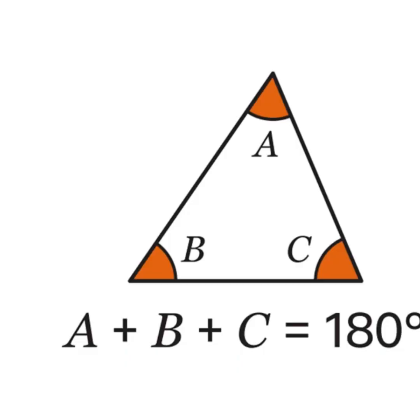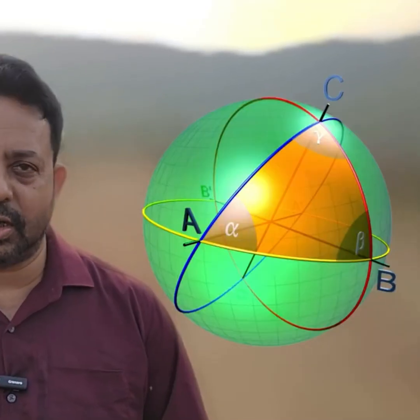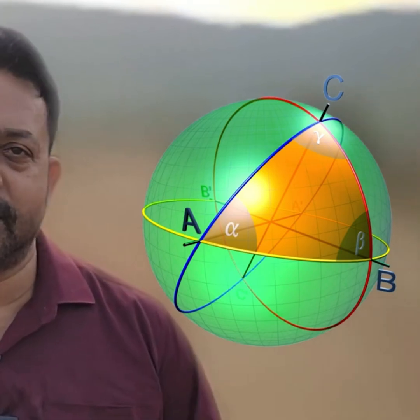What if I tell you that the sum of the angles in a triangle is not 180 degrees? When we draw a triangle on a sheet of paper, the sum of the angles is confined to 180 degrees. But in practice, when we measure large-distance triangles on the surface of the earth, the sum of the angles is more than 180 degrees. This is spherical geometry.